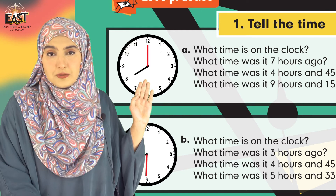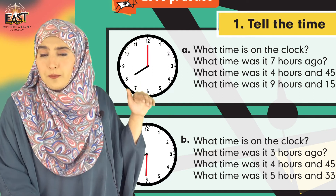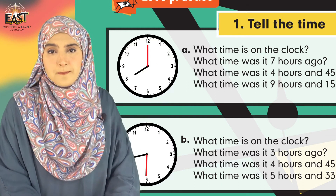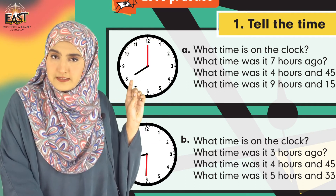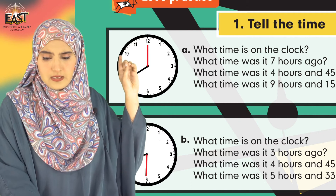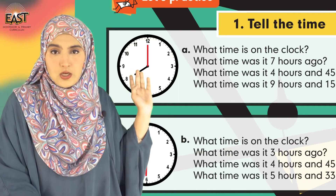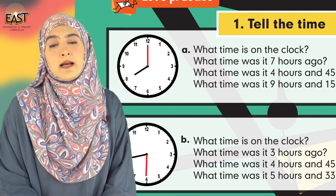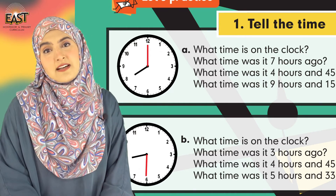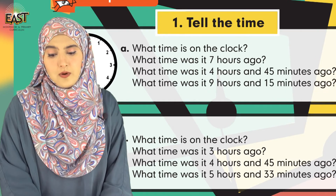Calculate karne ki koshish karein. If it's eight o'clock right now on this clock, we need to take the clock seven hours back. Two hours back gives us six, and six hours more back: five, four, three, two, one. So if we take this clock seven hours back, the time will become one o'clock. Seven hours pehle time tha — one o'clock. Very good!